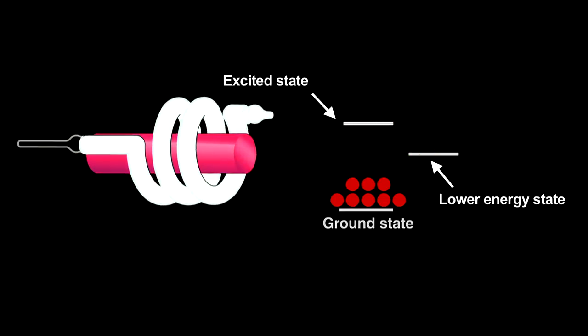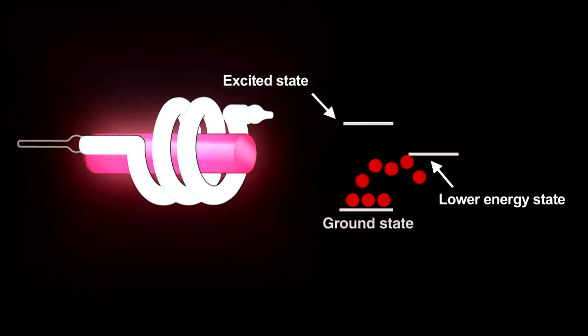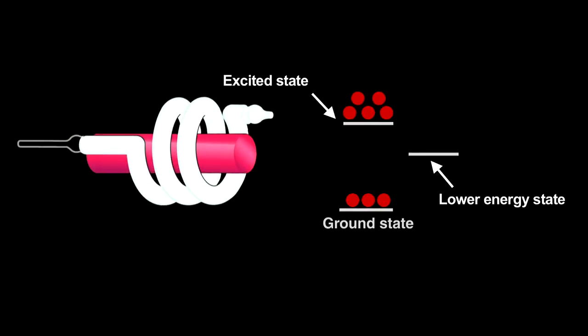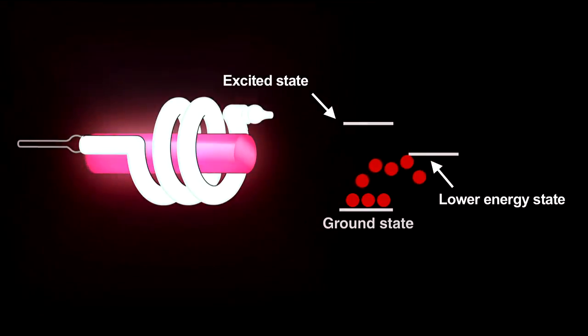To create a laser takes an extremely powerful lamp. In the ruby laser, repeated flashes, called pumping, make something amazing happen. They supply so much energy that a population inversion occurs. Here, more electrons in the energy level just above the ground state than in the ground state.